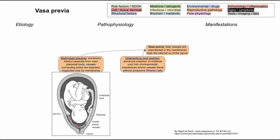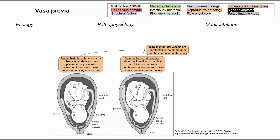The other way you can have vasa previa is with a velamentous cord insertion. This is when the placenta is all in one piece, but you have abnormal insertion of the umbilical cord into the amniotic membranes, and the vessels travel without Wharton's jelly — the protective coat that normally covers the umbilical cord — which is lacking with this abnormal insertion.